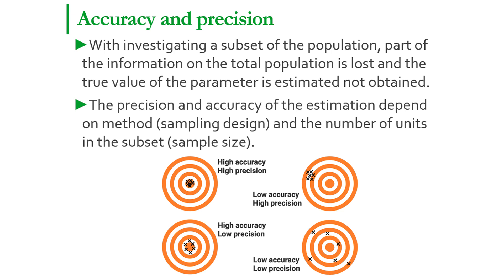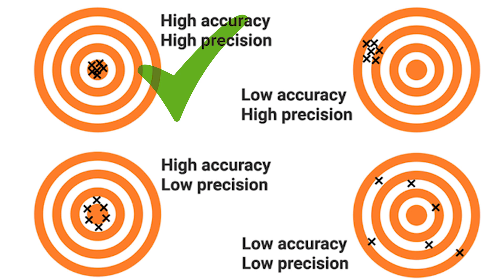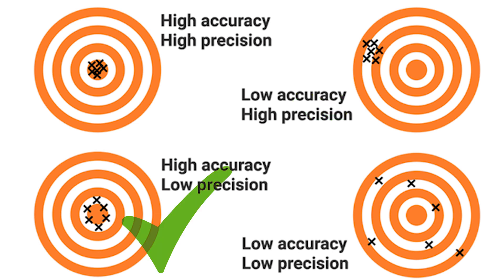We have on this picture a list of four targets with different results. We have a soldier shooting at the target and four different results. In the top left corner, we have the best results: high accuracy and high precision. In the top right target, we have low accuracy and high precision. In the bottom left, we have high accuracy and low precision. And in the bottom right, we have low accuracy and low precision.